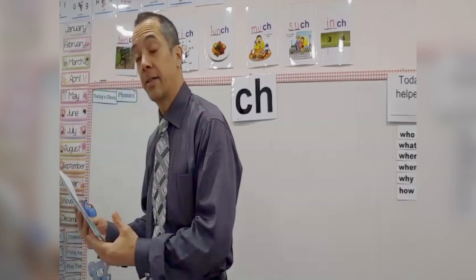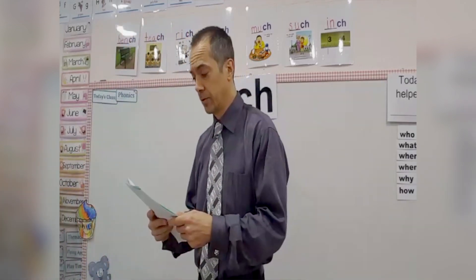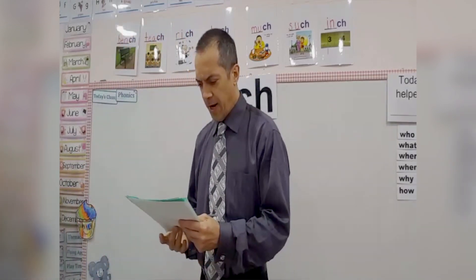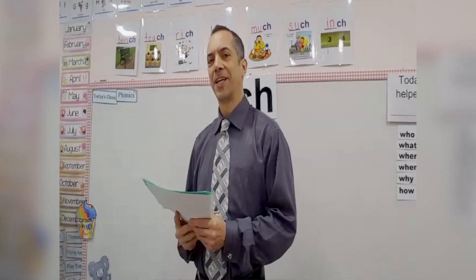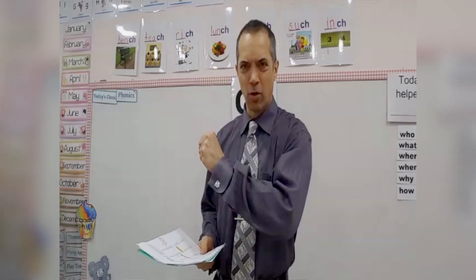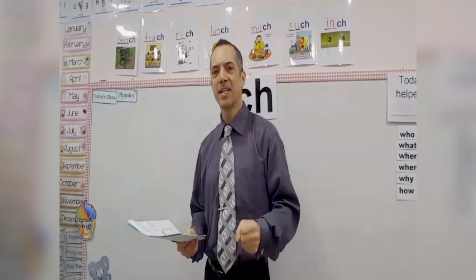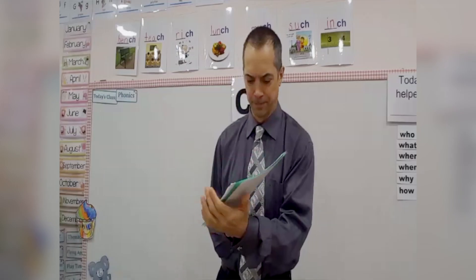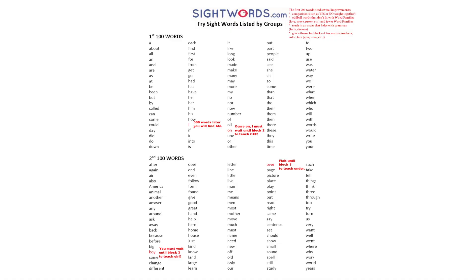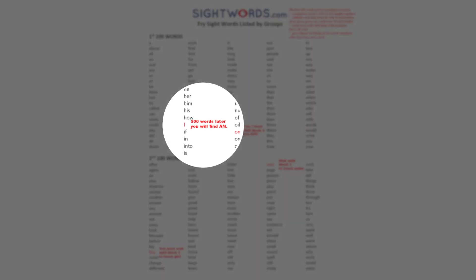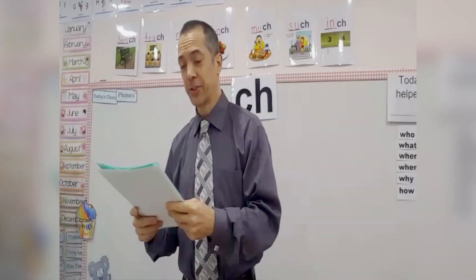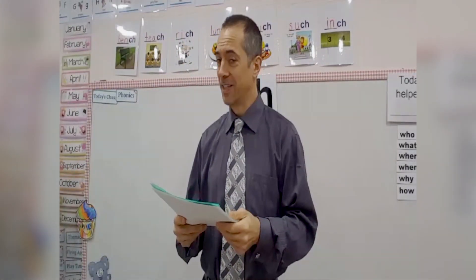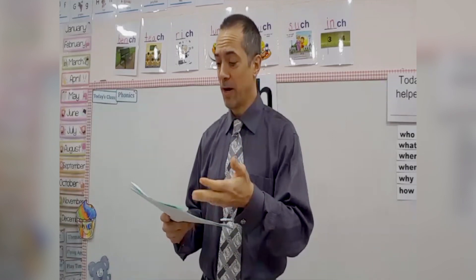I would not use that list in school. Edward Fry put together a list of 1,000 words — 10 blocks of 100 words apiece — and I think this list is laughable. The first block has 'I,' but 500 words later you'll see 'am.' This is not a grammar-based list.